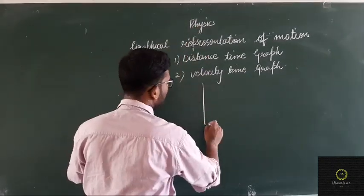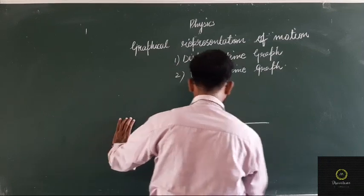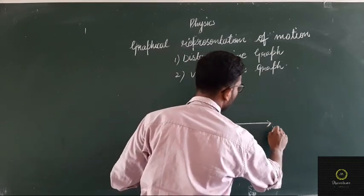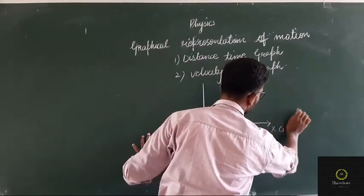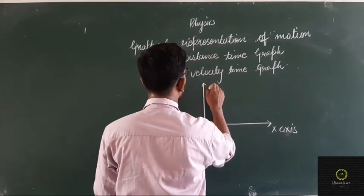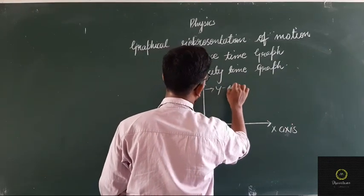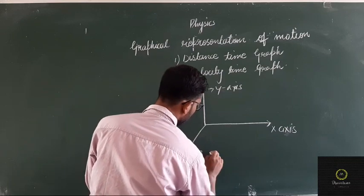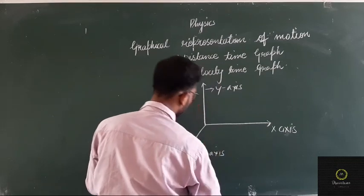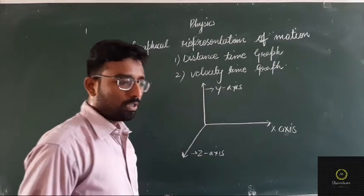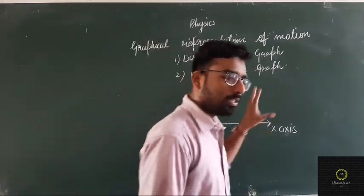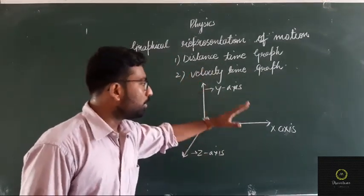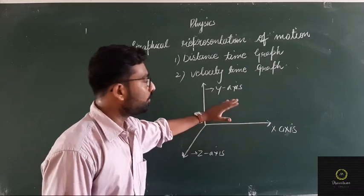As we all know, this is the x-axis, this one is the y-axis, and this one is the z-axis — which is also termed as imaginary. So this is a three-dimensional structure of a graph. But for now, we only need to study the two axes: the x-axis and the y-axis.